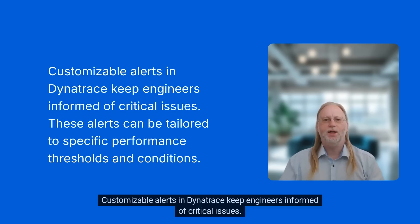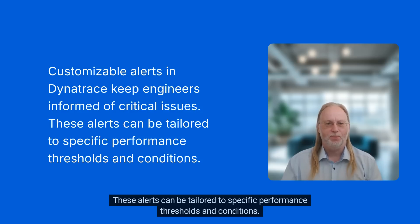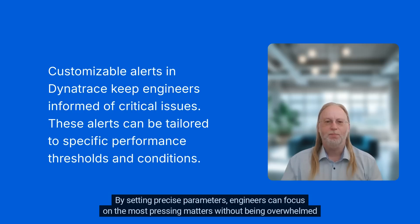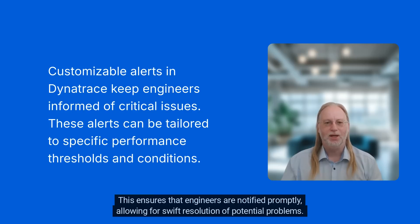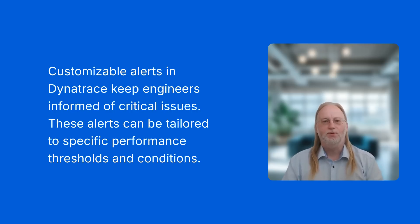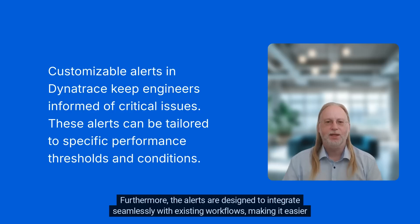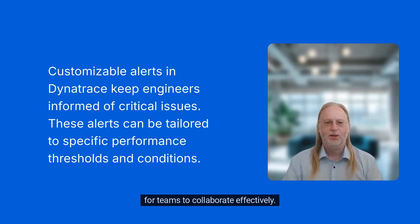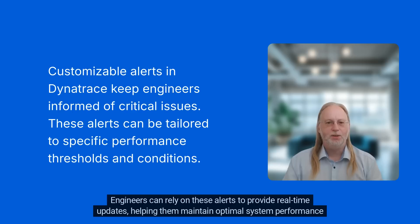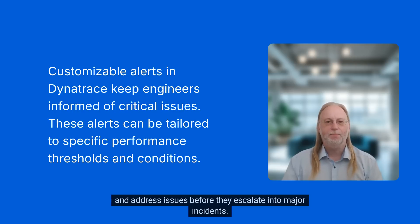Customizable alerts in Dynatrace keep engineers informed of critical issues. These alerts can be tailored to specific performance thresholds and conditions. By setting precise parameters, engineers can focus on the most pressing matters without being overwhelmed by unnecessary notifications. This ensures that engineers are notified promptly, allowing for swift resolution of potential problems. Furthermore, the alerts are designed to integrate seamlessly with existing workflows, making it easier for teams to collaborate effectively. Engineers can rely on these alerts to provide real-time updates, helping them maintain optimal system performance and address issues before they escalate into major incidents.